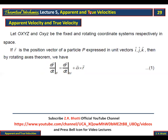What we call apparent velocity is DR/DT in the moving coordinate system. The true velocity comes from the fixed coordinate system, since that coordinate system is not rotating. This is the definition: apparent velocity is measured by an observer in the rotating system, while true velocity corresponds to the fixed coordinate system.